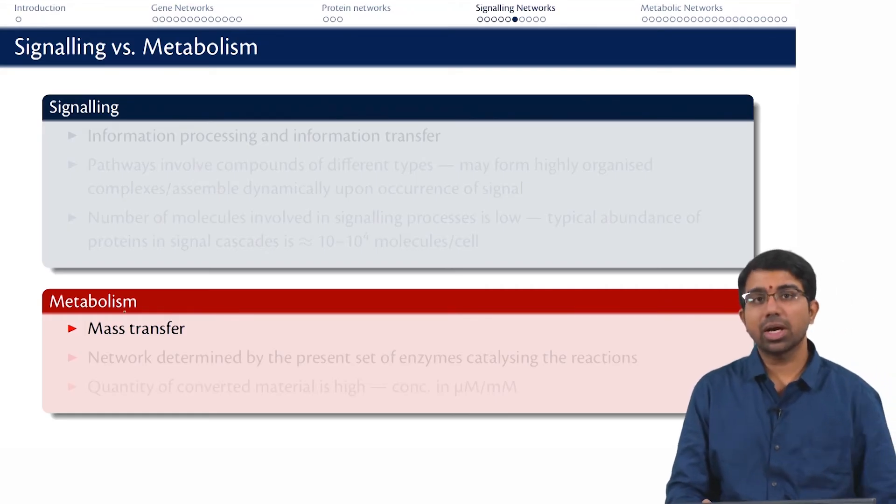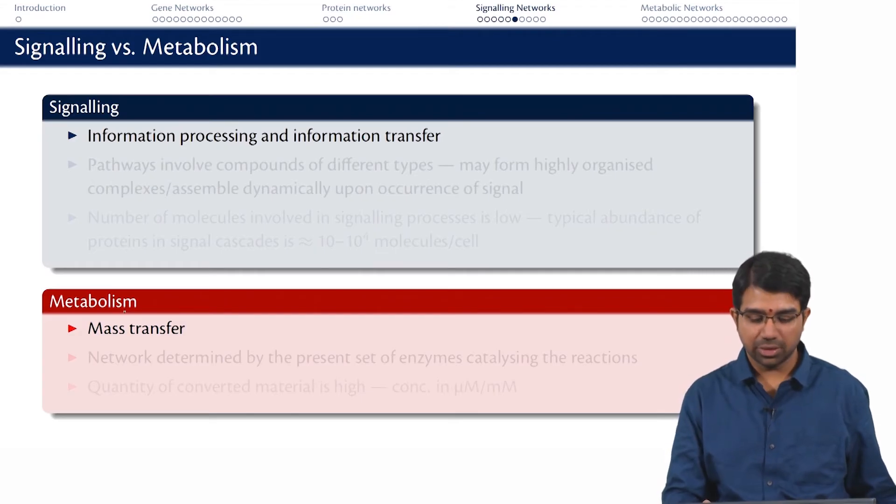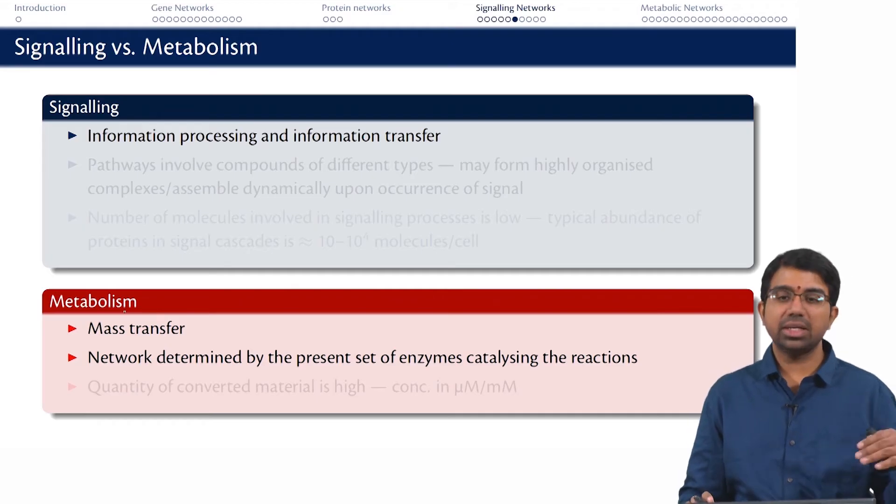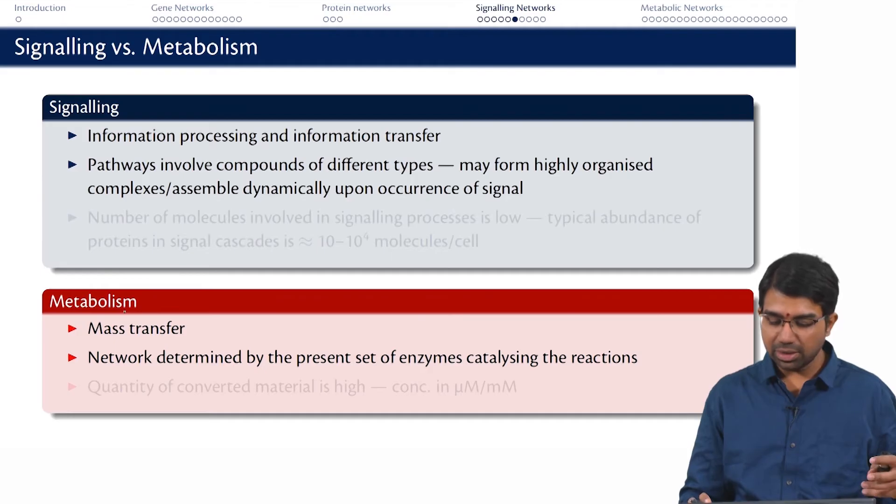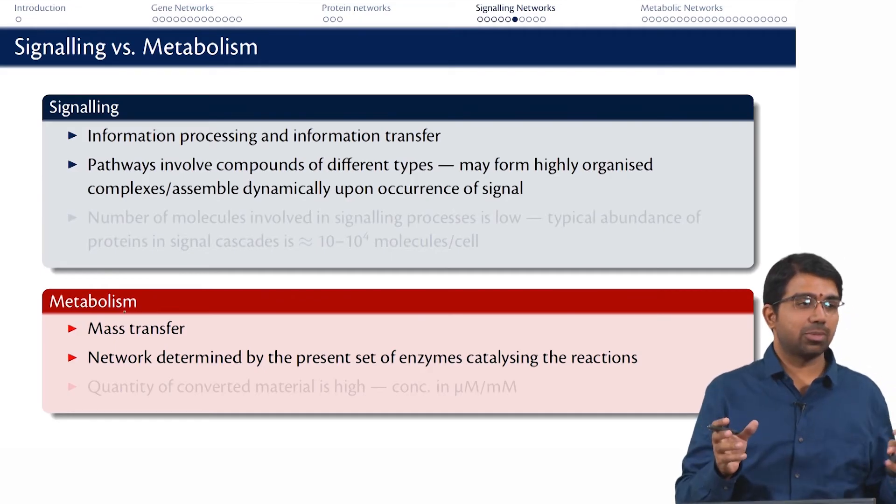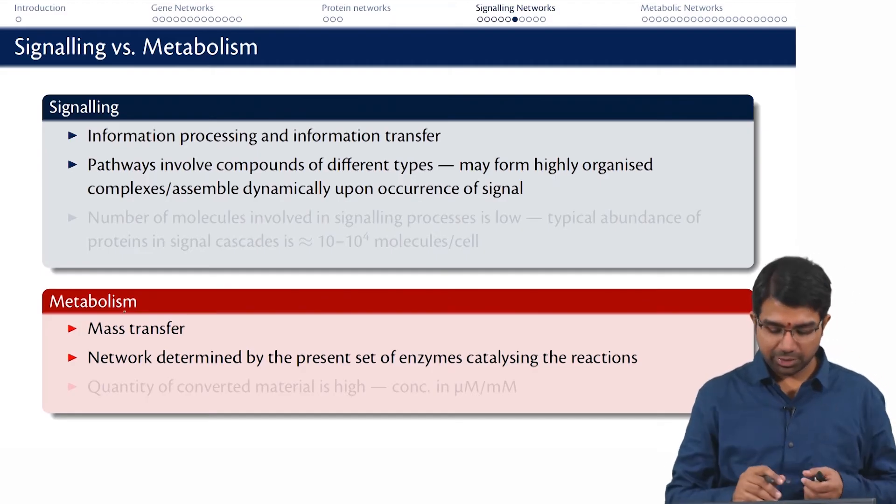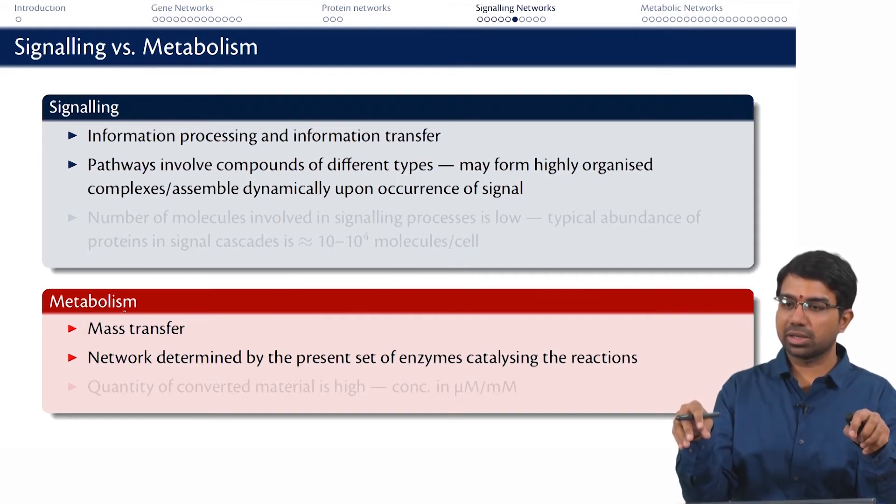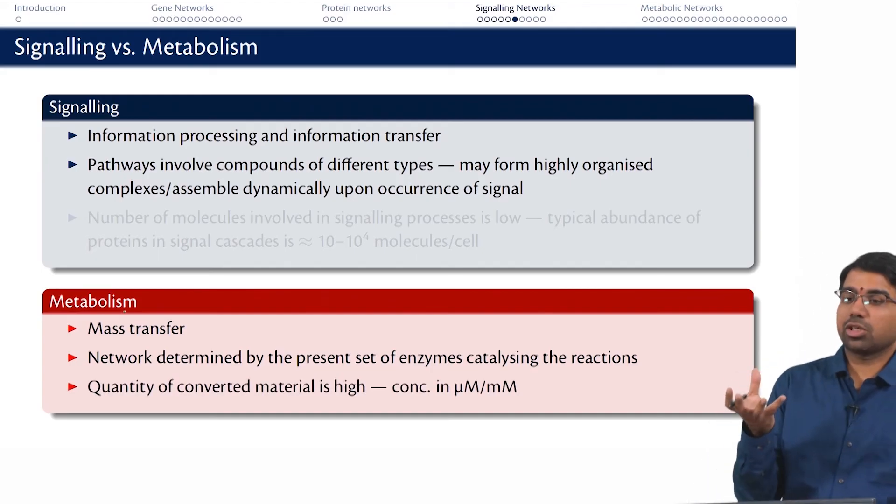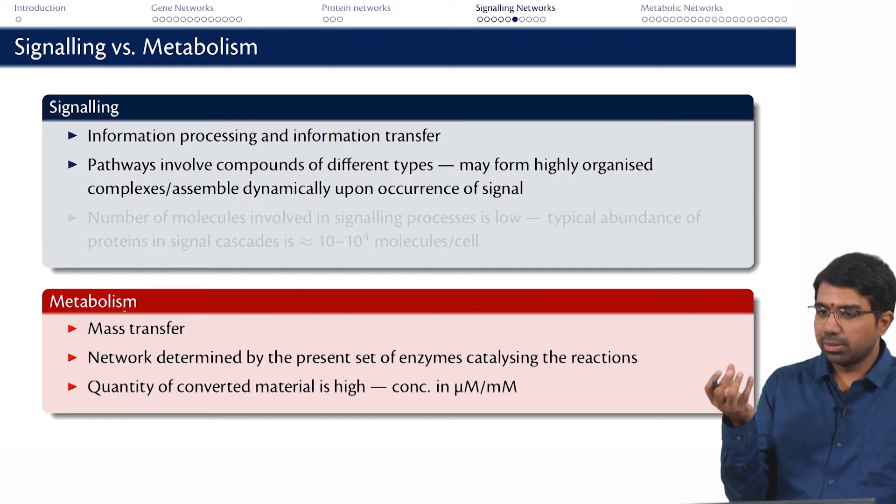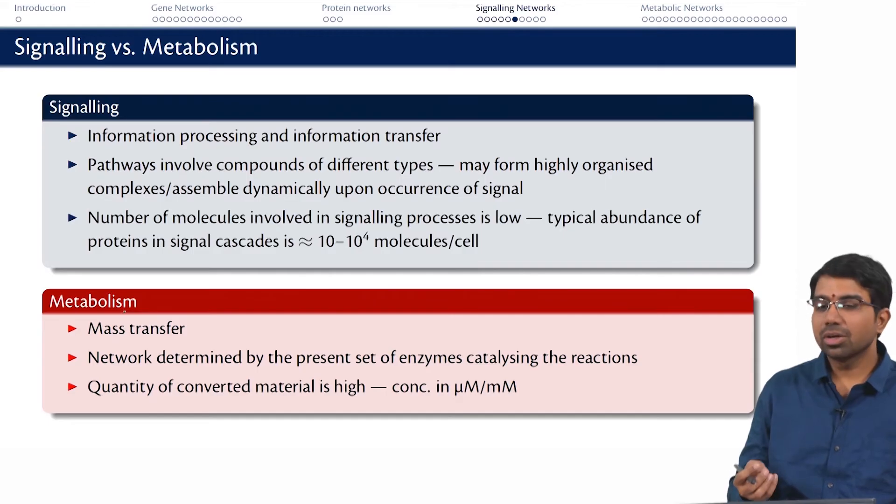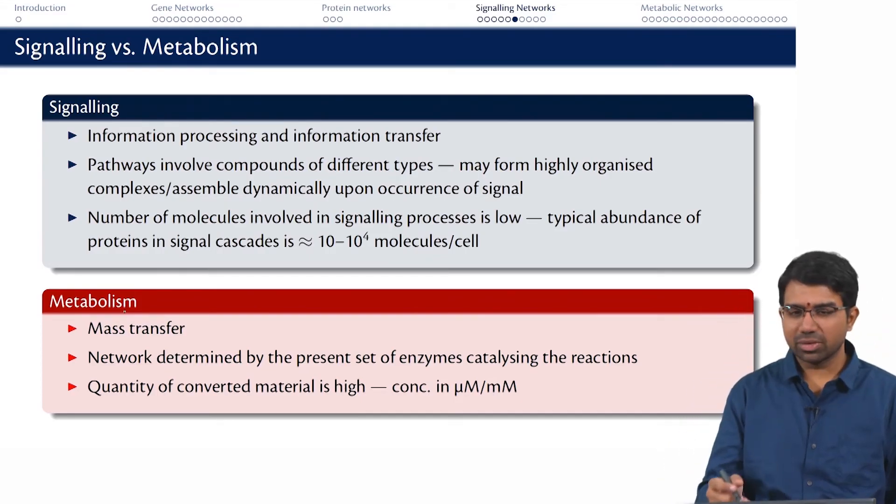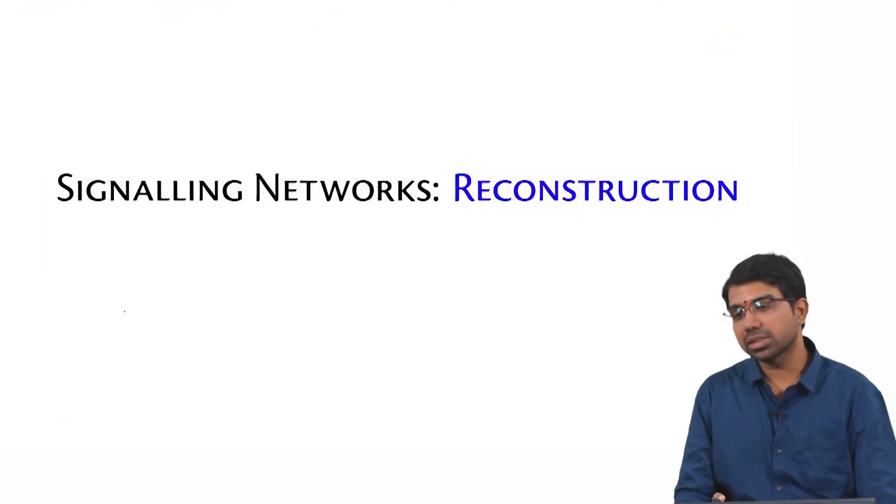What are the differences? In metabolism we have a lot of mass transfer. In signaling it is mostly information processing and transfer. In metabolism the network is determined by the current present set of enzymes catalyzing the reactions. Whereas in signaling there are compounds of different types and there is a lot of complexity that is possible. You can have sub-networks, modules all operating in different ways. You do have pathways here but in signaling the organization is a lot more important because one module might fire under one condition, the other module might fire under another condition. And in metabolism you have lots of reactions happening. You have nanomolar, micromolar, millimolar level concentrations. Whereas in signaling you are talking about a few molecules, not a few moles or micromoles. So still in many cases you have enough molecules so that you can go in for regular dynamic modelling, but some cases you may have to resort to stochastic modelling.